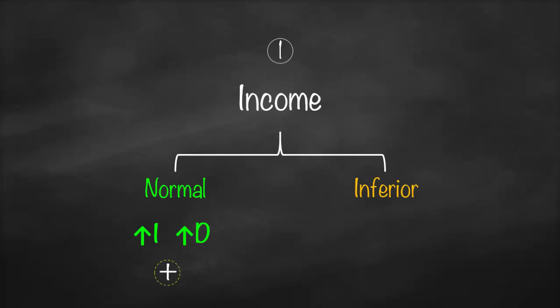An inferior good means a low quality good. If you have higher income you're going to consume less of it, and vice versa — if you lost your job and have lower income you'll consume more. For example, two-dollar noodles: as a student with low income you eat more noodles, but if you earn a hundred thousand dollars a year you'll eat at a luxurious restaurant. So higher income results in lower demand for noodles — a negative relationship between income and demand.